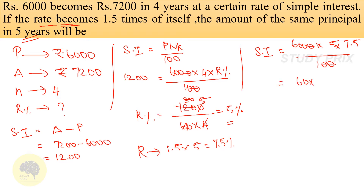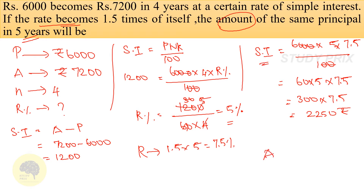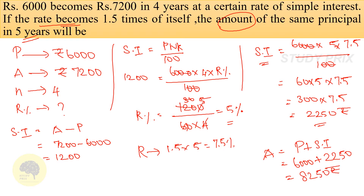SI = 6000 × 5 × 7.5 / 100 = 300 × 7.5 = 2250 rupees is the simple interest. We have to find the amount, so amount = principal + simple interest = 6000 + 2250. Therefore 8250 rupees is the total amount.